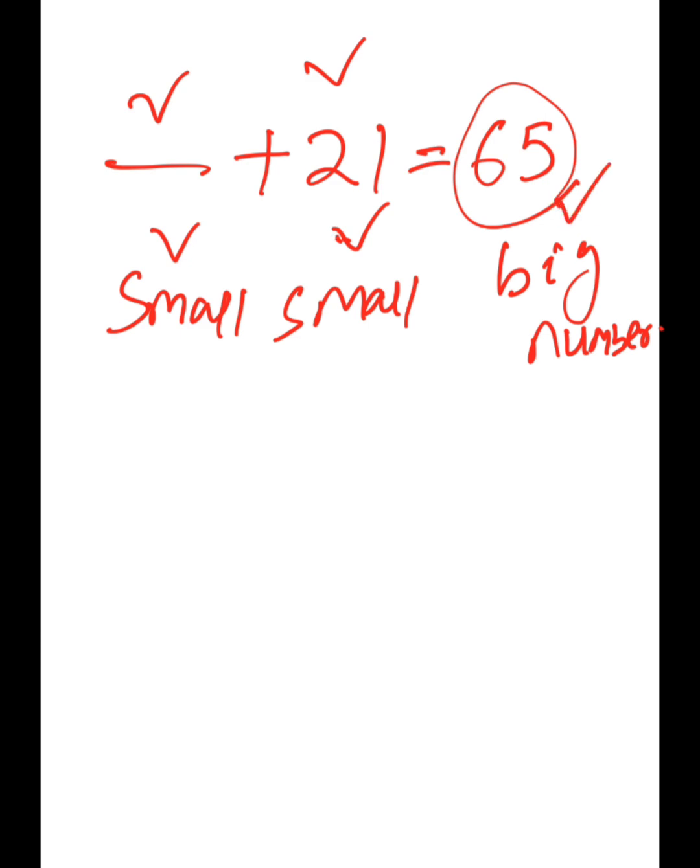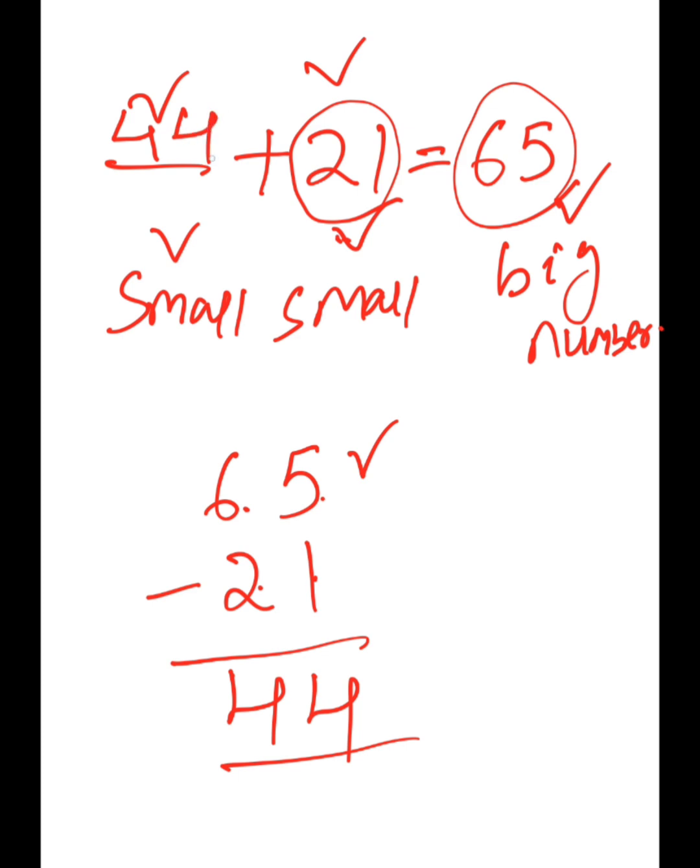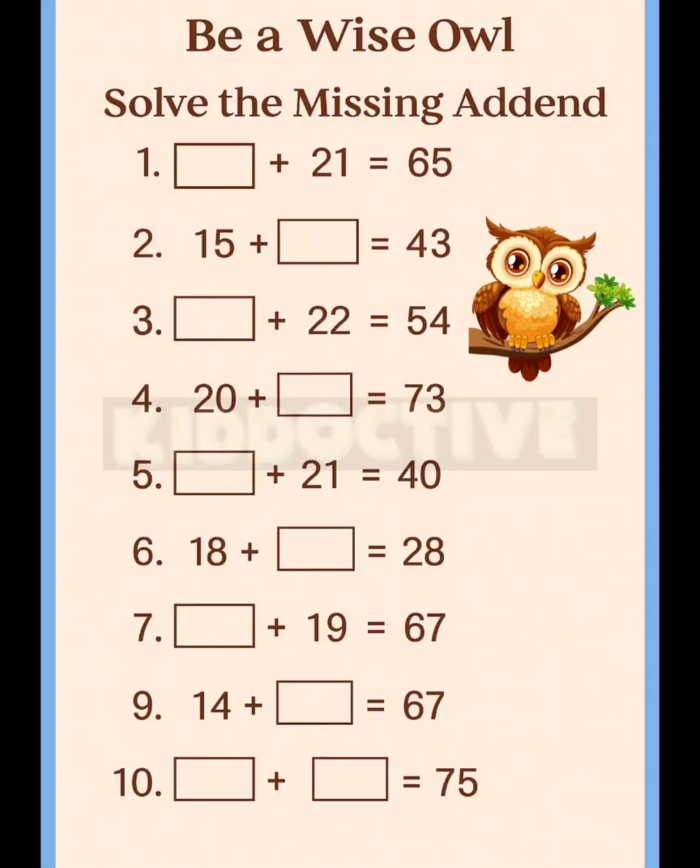One smaller one is given and one bigger one is given. To get the other smaller one, we subtract from the bigger one to the one that is given. So 65 minus 21: 5 minus 1 equals 4, and 6 minus 2 equals 4. So the answer is 44. 44 plus 21 equals 65.